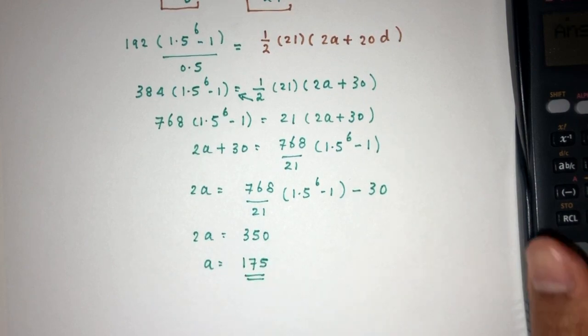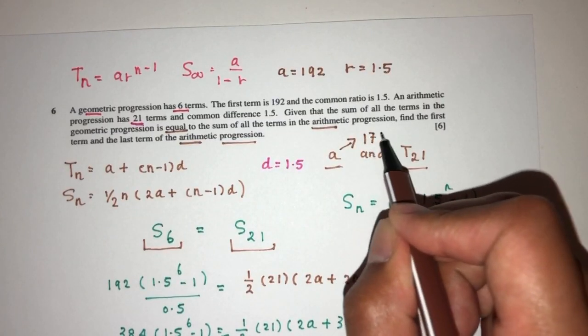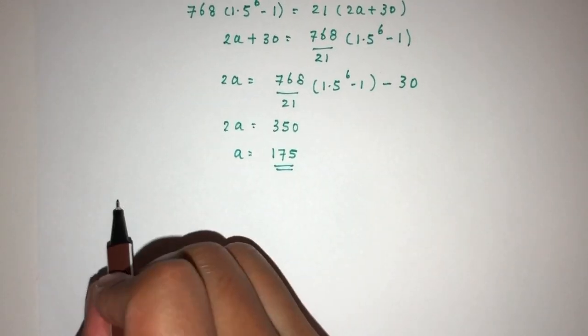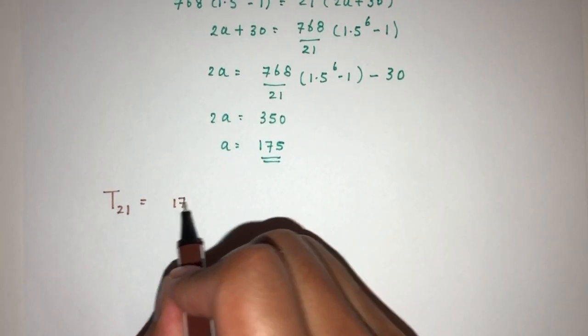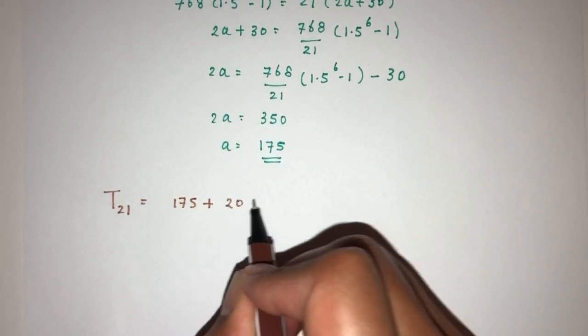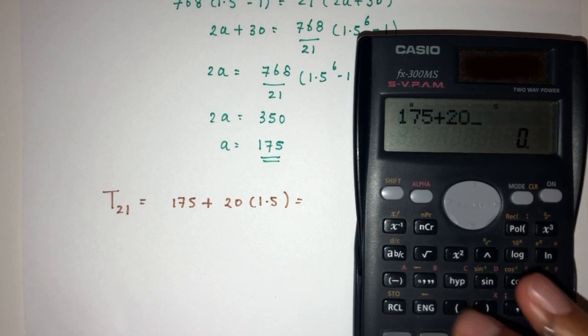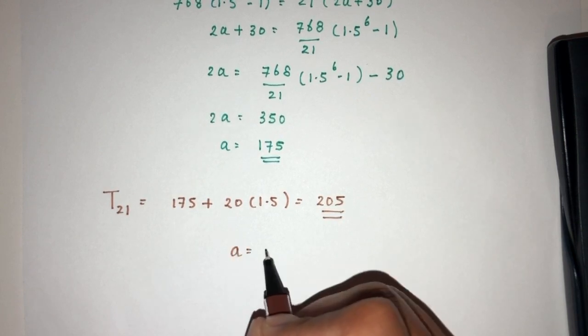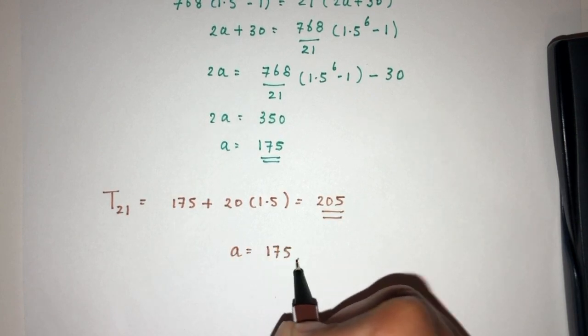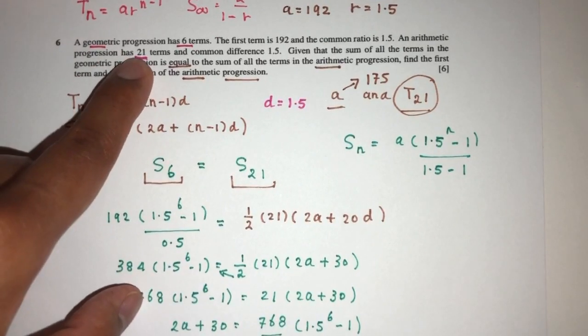We have found the value of a to be this. Now moving on, we can find the value of the first term a is 175, and the last term is the 21st term. So T21, now I'll be using the formula of course. That will be a plus n minus 1 will be 20 times d, which is 1.5 for the common difference. That will be 175 plus 20 times 1.5, that should be 205 for the last term. So first term was found to be 175, and last term was 205. Last term was the 21st term because we have 21 terms in the progression.